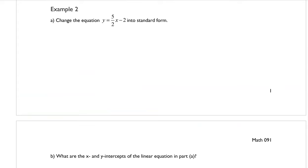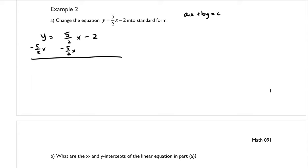Example 2 says to change the equation y equals 5 over 2x minus 2 into standard form. Recall that standard form looks like ax plus by equals c, so we want all x and y terms on the left side. Starting with y equals 5 over 2x minus 2, we subtract 5 over 2x from both sides, leaving us with negative 5 over 2x plus y equals negative 2. That is the equation in standard form.